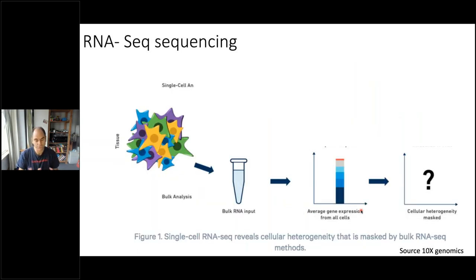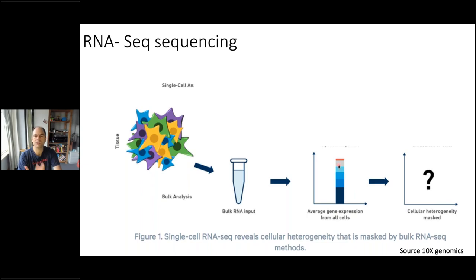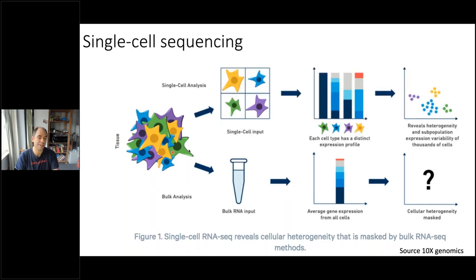Before single cell, normal RNA sequencing captured the abundance of transcripts by sequencing the mRNA and counting how many reads map. With that you get the average expression of a cell — each value is the expression of a specific gene — but you know nothing about cellular heterogeneity. With single cell, on the contrary, you can actually split the different cell types, sequence each one alone, and save the expression of different genes. With that, you have different cell types and this heterogeneity to look into the samples.